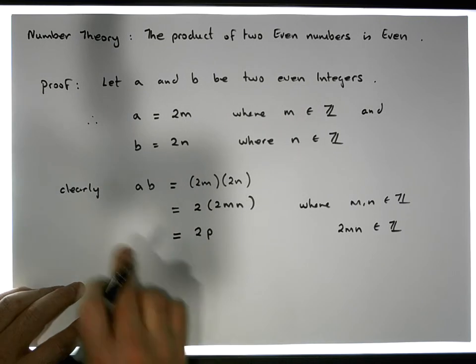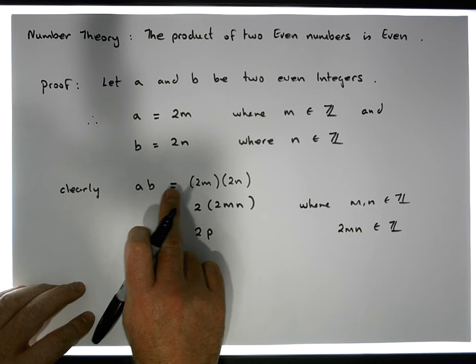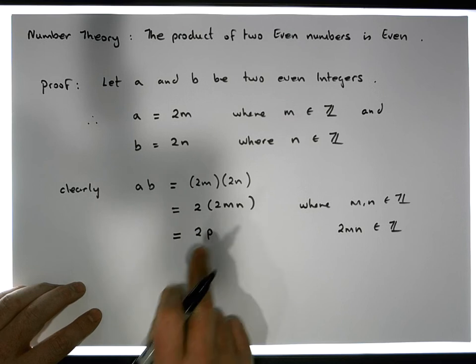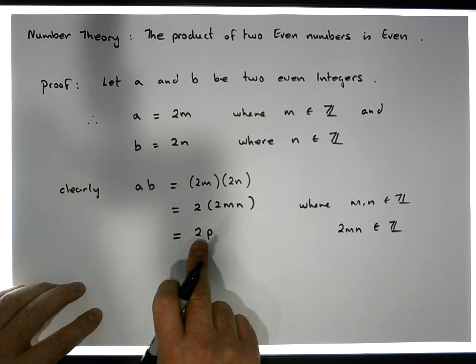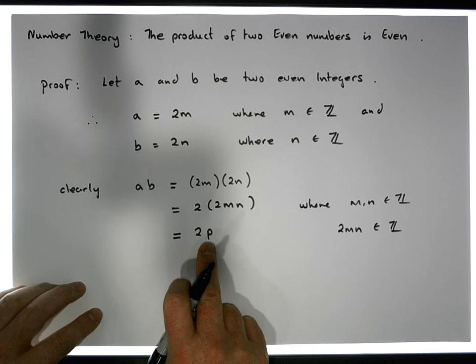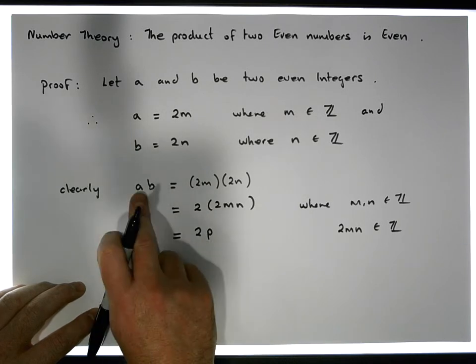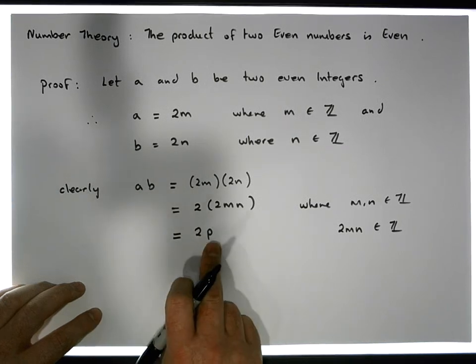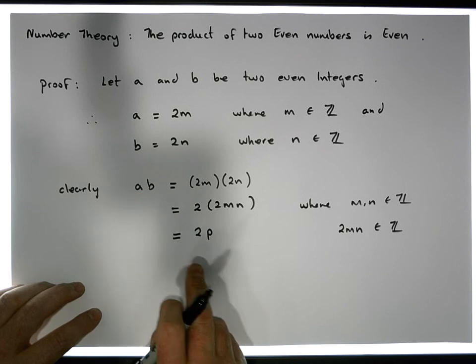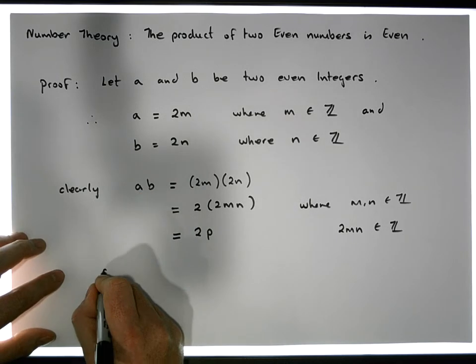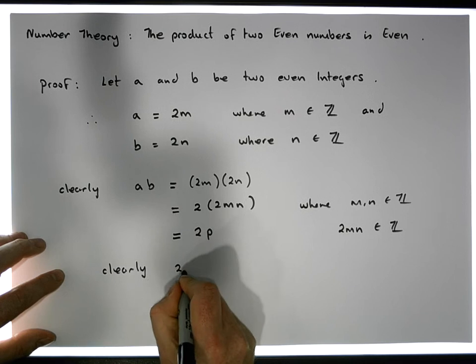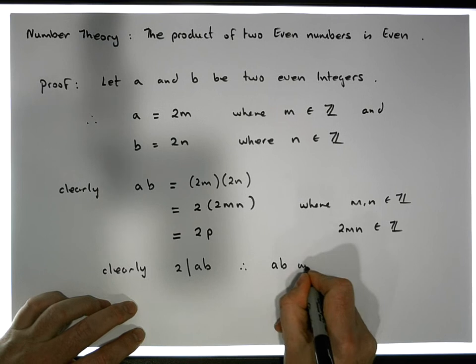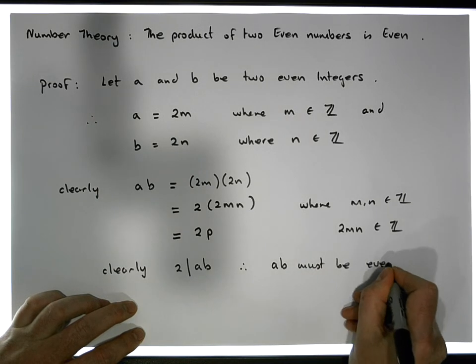So what have we actually shown here? Well, what we've actually shown is that the product of two even numbers is actually equal to the product of 2 times some other integer, which is precisely our definition of an even number. This number here is clearly divisible by 2. Hence, the product AB must also be divisible by 2. As this was deduced, this is a consequence of this particular product. So 2 times P is clearly divisible by 2, and therefore AB is clearly divisible by 2. Clearly 2 divides the product AB, and therefore we have AB must be even.